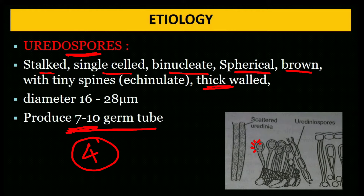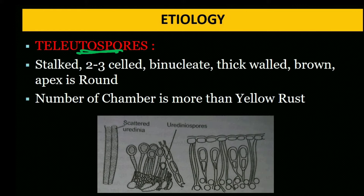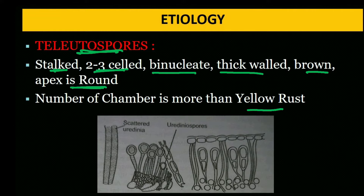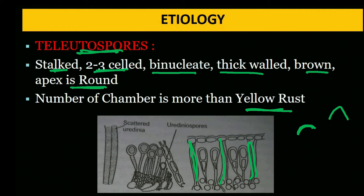Teliospore is also stalked, 2–3 cells, binucleate, thick-walled, brown, and the apex is rounded — unlike stem rust where the apex is pointed. The number of chambers is more than yellow rust. Teliospores form between paraphyses structures.